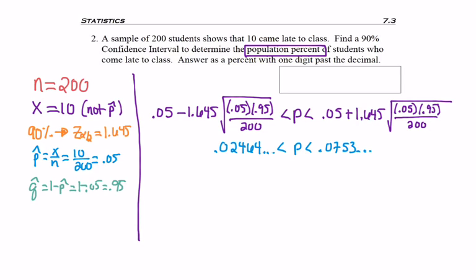The directions ask to answer as a percent with one place to the right of the decimal. So I'm going to turn those decimal values into percents, 2.5% to 7.5%. Before I commit my answer to an answer box, I want to double check that my p hat of 5% or 0.05 is in my range, and 5% is in between 2.5% to 7.5%. So I'm ready to answer the question, remembering that the smaller number should always come first and the larger number should come second.